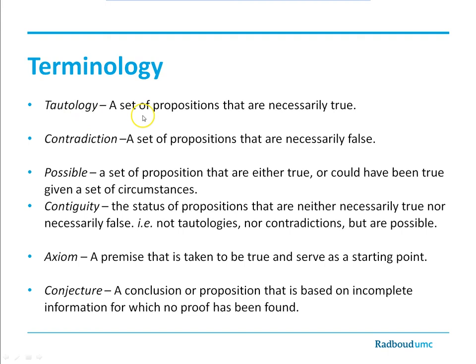First, a little bit of terminology. The first one is a tautology — a set of propositions that is necessarily true. For instance, 'the sky is blue or the sky is not blue.' This combination always covers every possible instance: during the day the sky is blue, during the night the sky is black — both are covered, so they are necessarily true. A contradiction, on the other hand, is a set of propositions that is necessarily false — 'the sky is blue and the sky is not blue' — the sky cannot be both at the same time.